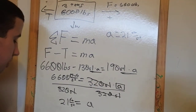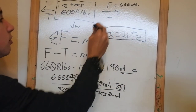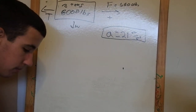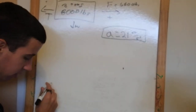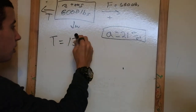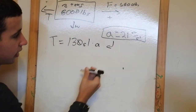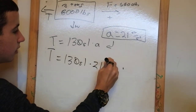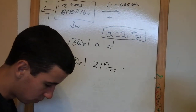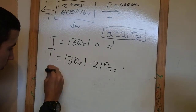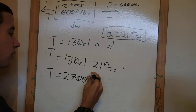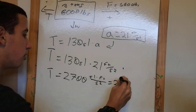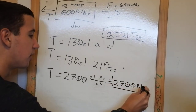Now we're not done yet — we need to find the tension between the strings. Let's go back to the first crate. We solved for tension as 130 slugs times acceleration. Well, we now have acceleration, so we can just plug that in. Tension equals 130 slugs times 21 feet per second squared. Multiply that out and we get T equals 2,700 slug·feet per second squared, which equals 2,700 pounds. That is the tension in the chain.